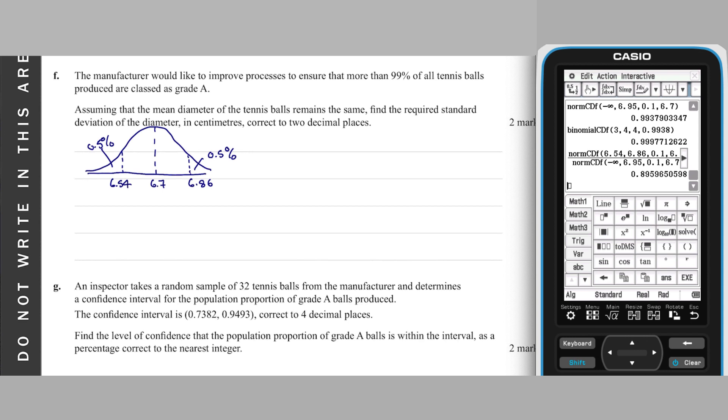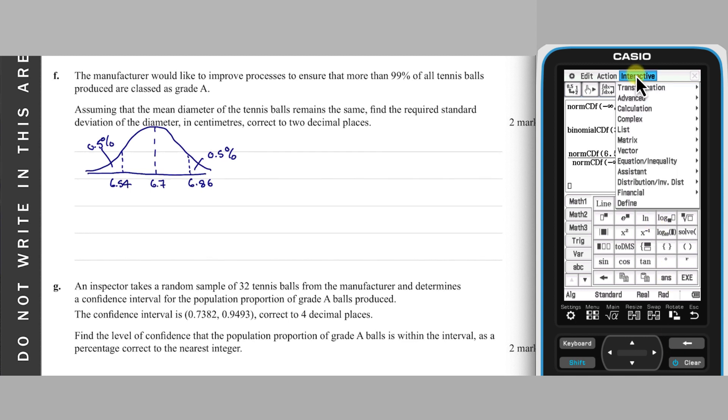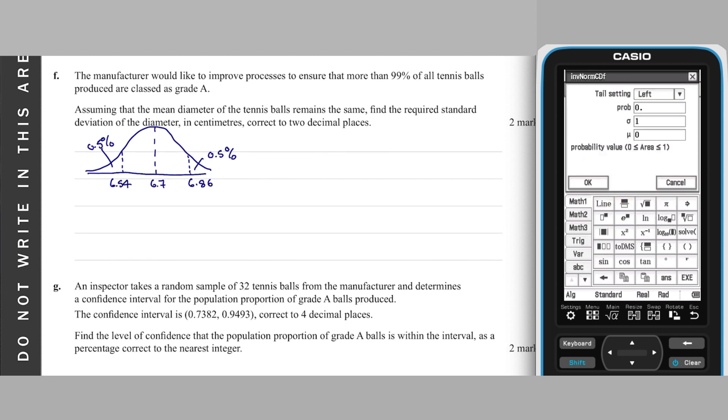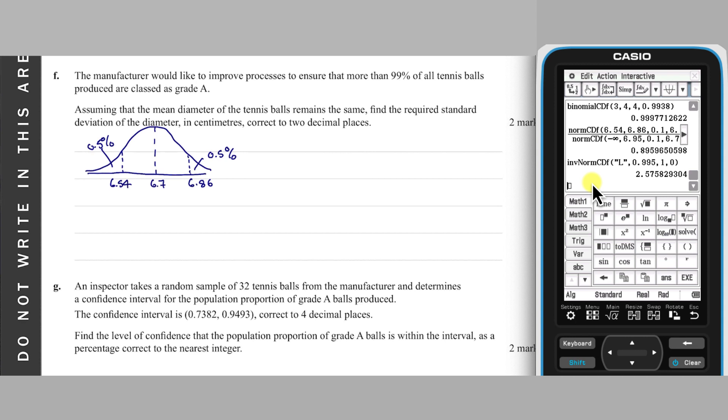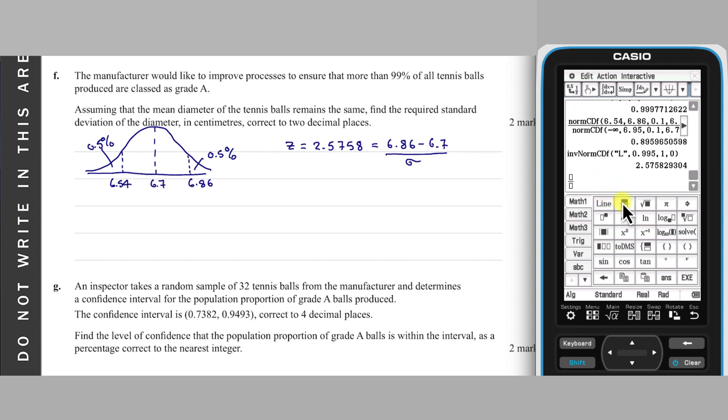To use the Z-score formula, we need the Z-score associated with a cut-off of the bottom 99.5% of a population. I will calculate this via interactive distribution inverse, invnorm CDF. Enter the probability as 0.995, and leave sigma and mu as 1 and 0. This means that we know 2.5758 is equal to 6.87 minus 6.7 over sigma. Rearranging, sigma is 0.16 divided by the Z-score, which is 0.0621, or 0.06 to two decimal places.